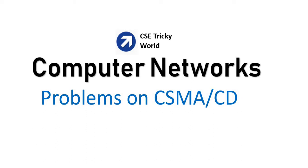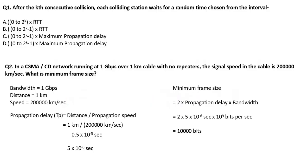Computer Networks, Problems on CSMA/CD. The first problem: after the kth consecutive collision, each colliding station waits for a random time chosen from an interval. The options are given. The kth consecutive collision means one after another — these are consecutive collisions between two stations' packets.